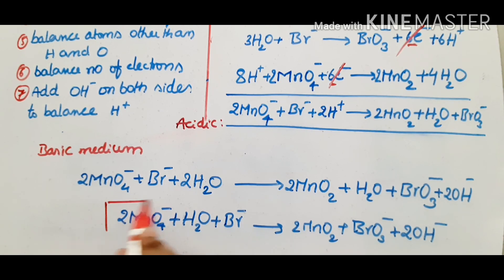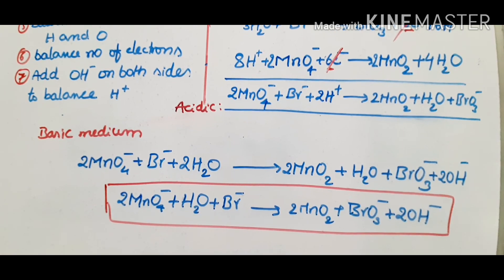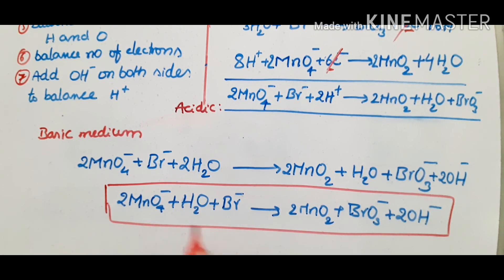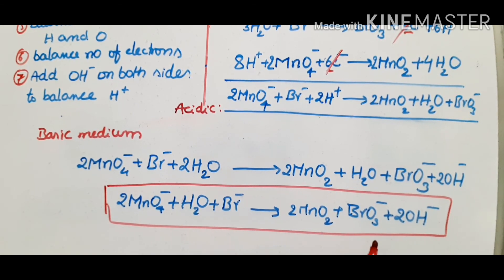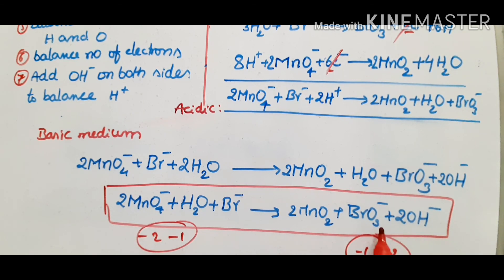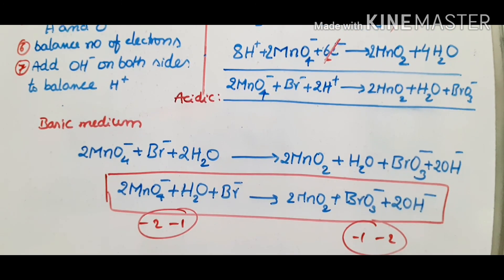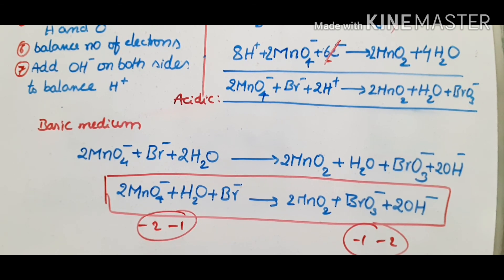This is the final balanced redox reaction in basic medium: 2MnO4⁻ + H2O + Br⁻ → 2MnO2 + BrO3⁻ + 2OH⁻. Check the total charge: left side has 2MnO4⁻ + Br⁻ = -2 -1 = -3. Right side has BrO3⁻ + 2OH⁻ = -1 - 2 = -3. Charges are balanced. Atoms and oxygens are also balanced. This is the complete balanced redox reaction in basic medium. If you like this video, please subscribe to my channel. Thanks for watching.